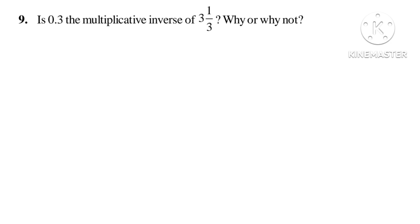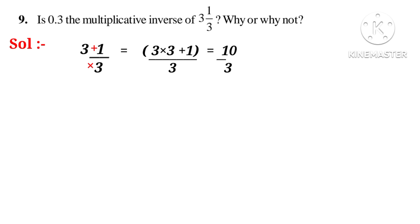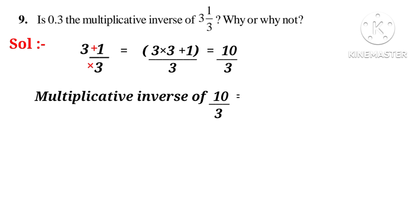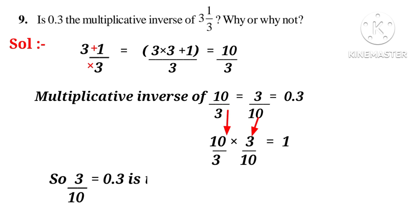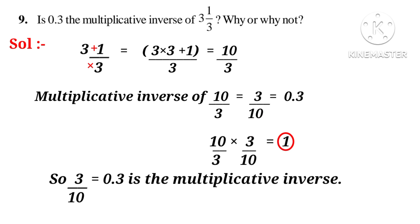Now let us do the ninth problem: is 0.3 the multiplicative inverse of 3 and 1 by 3? Why or why not? Solution: convert 3 and 1 by 3 into an improper fraction using plus and into: 3 into 3 plus 1 by 3 equals 10 by 3. The multiplicative inverse of 10 by 3 is 3 by 10, which can be written as 0.3. Because 10 by 3 into 3 by 10 equals 1, its product is equal to 1. So 3 by 10, which equals 0.3, is the multiplicative inverse.